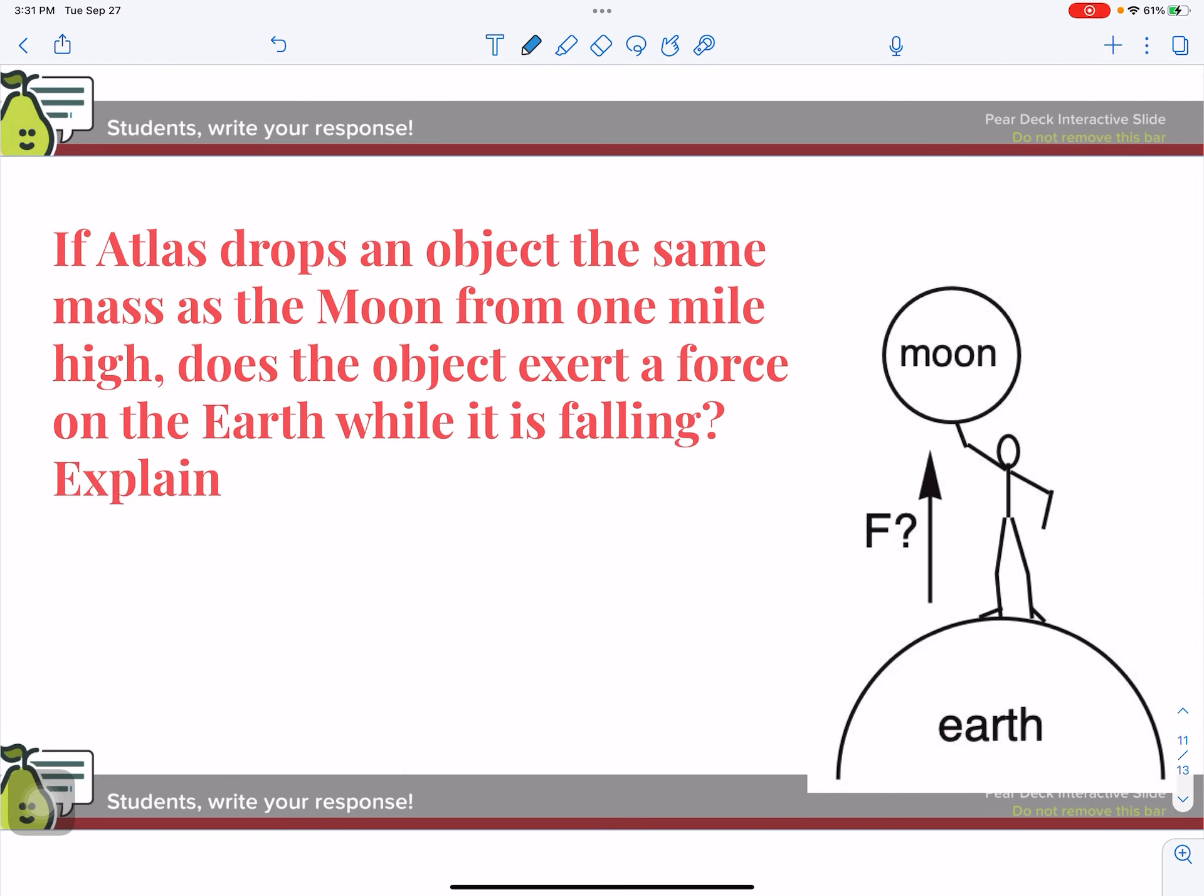Alright. So suppose Atlas drops an object the same mass as the moon from one mile high. Does the object exert a force on the moon or does the object exert a force on the earth while it is falling? And again, the answer is still yes. So we have moon. We have earth. There's a force of attraction between them.